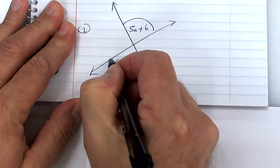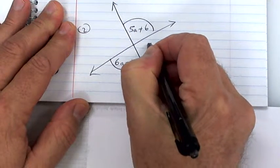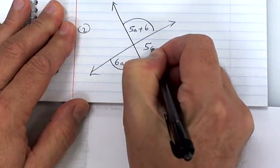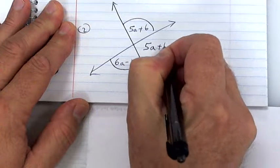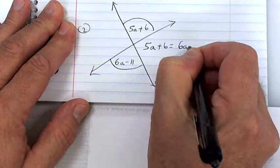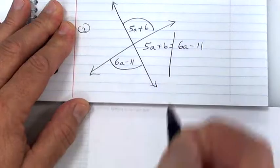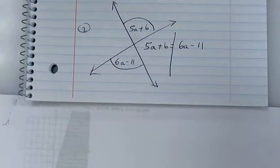On your test tomorrow, set vertical angles equal to each other. So put 5a + 6 is equal to 6a − 11.